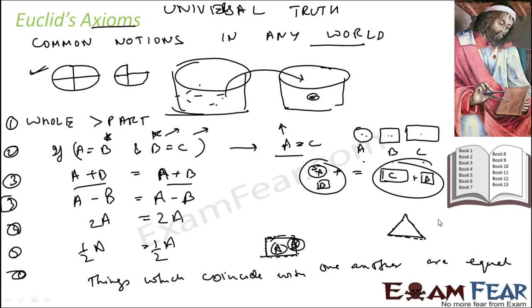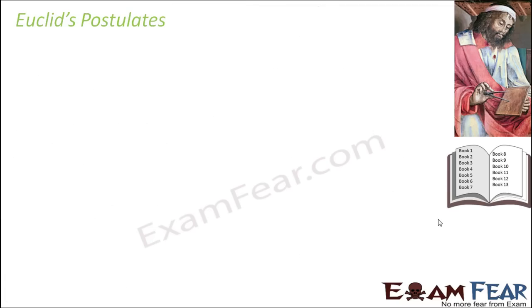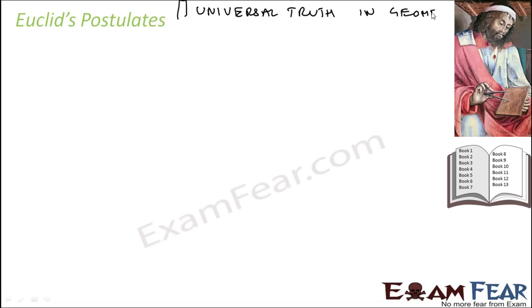So these were some of Euclid's axioms, and they are true in any discipline. Now let's talk about Euclid's postulates. They are also universal truths, but they are true only in geometry. And there are five Euclid's postulates.